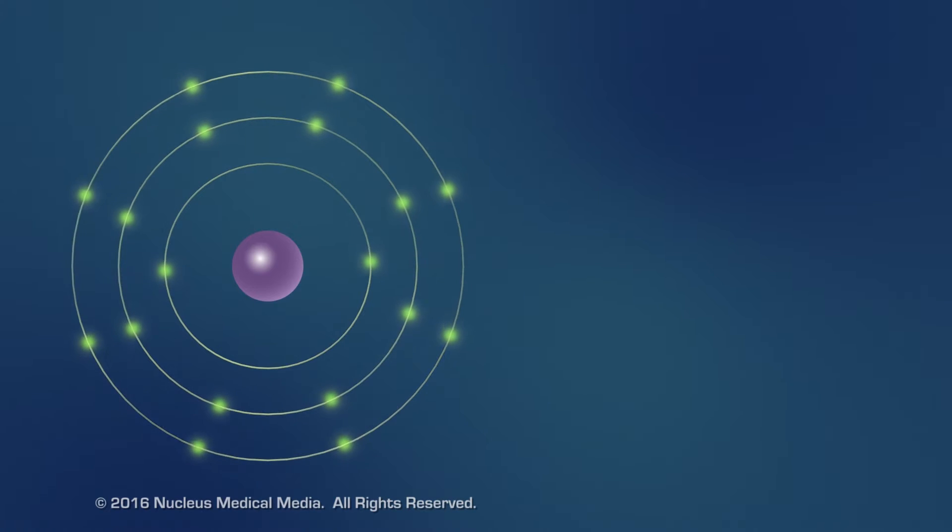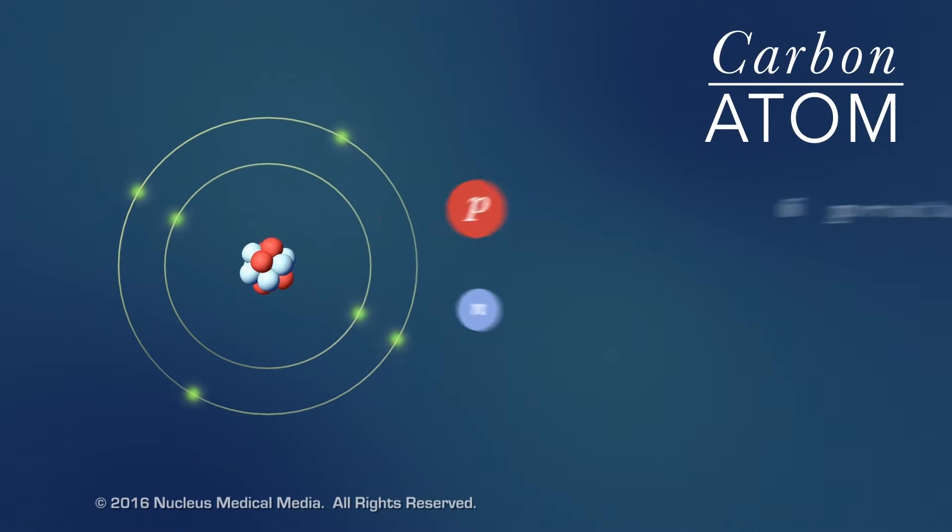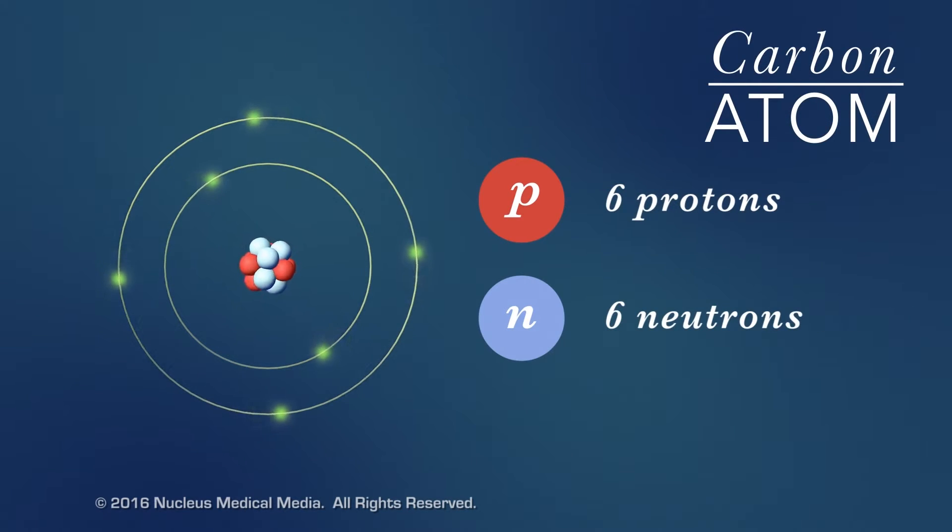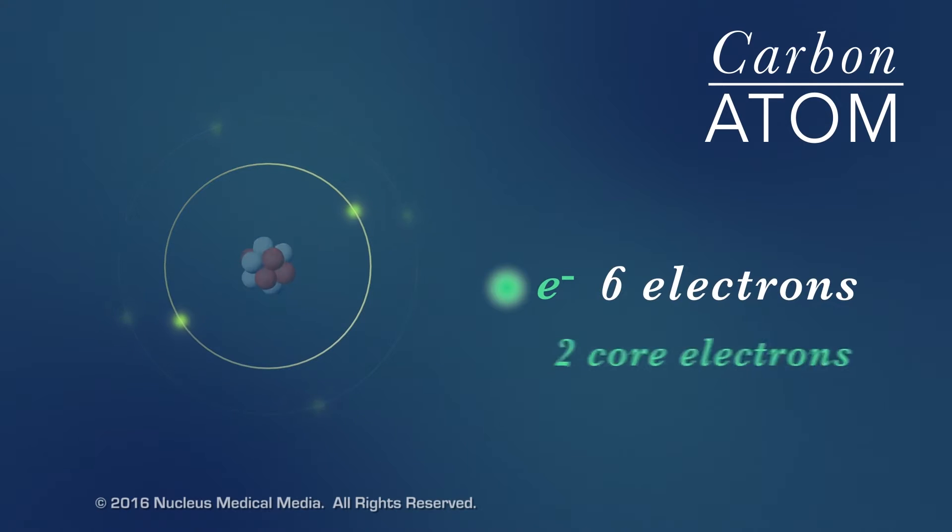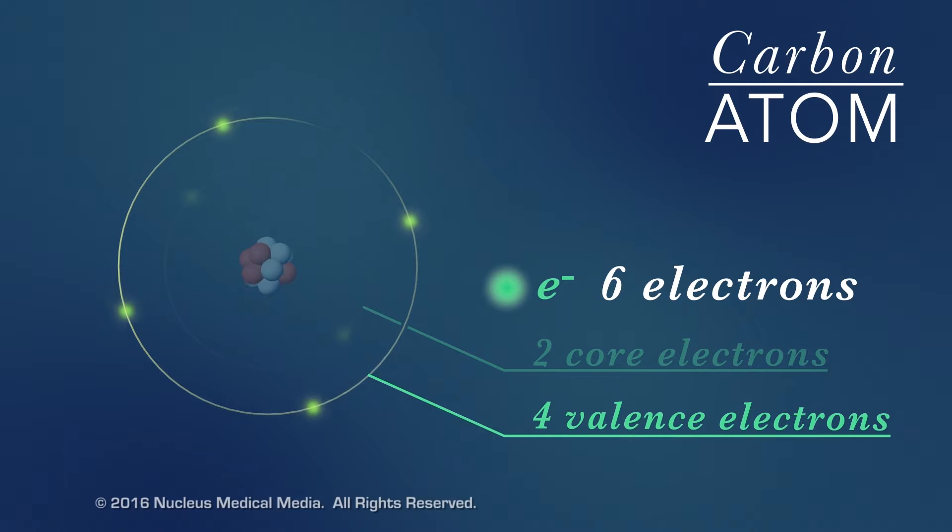For example, a carbon atom with six protons and six neutrons in the nucleus has six electrons. Notice that carbon has both core and valence electrons.